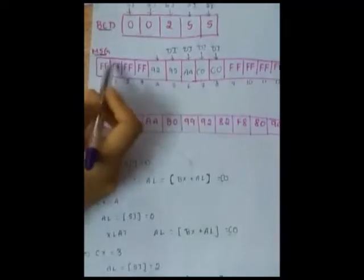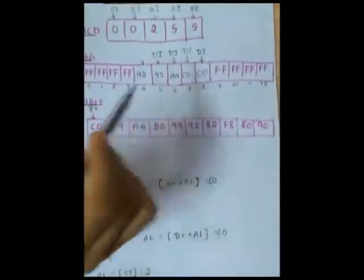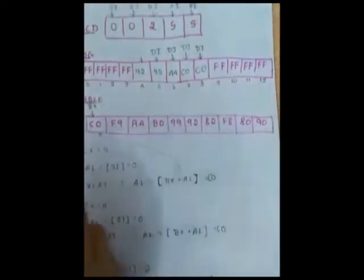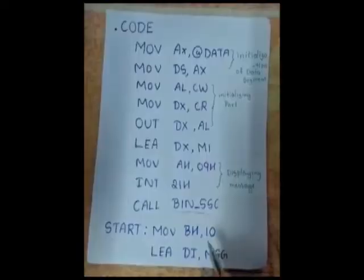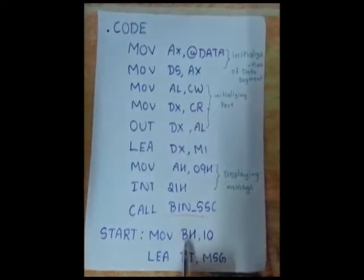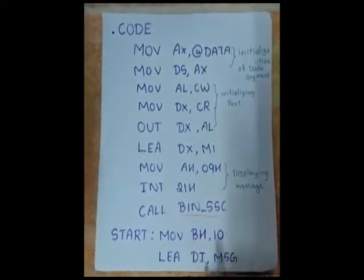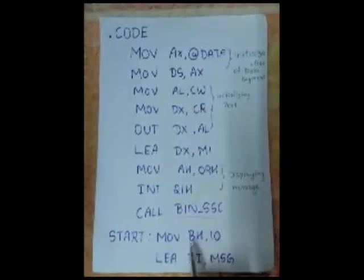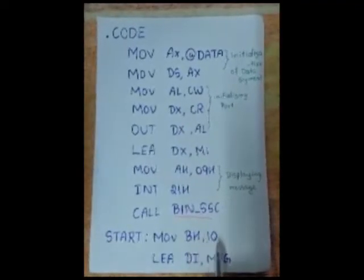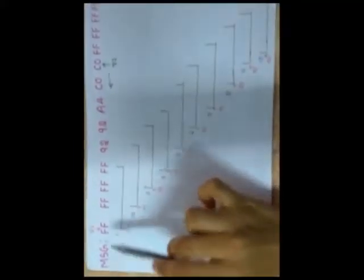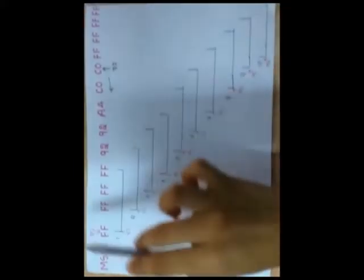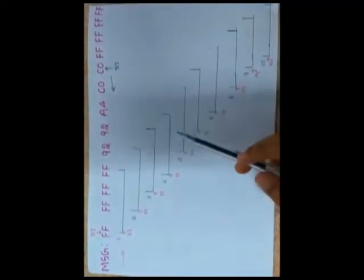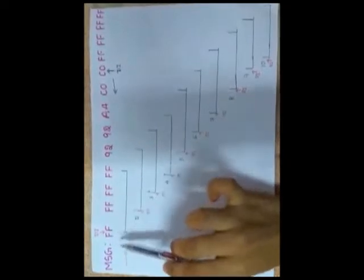So we now have the message with the BCD values inserted. We just have to display this message left to right and right to left in the seven segment display. For that, we assign register BH the value 10 and DI to the beginning of the message. Since the message consists of 13 values and the seven segment display can only show 4 at a time, we need 10 iterations. So BH should be 10 and DI points to the beginning of the message.